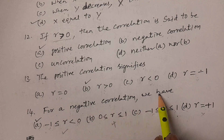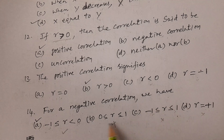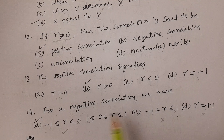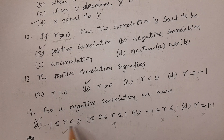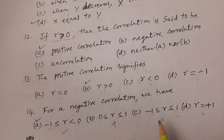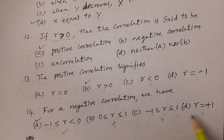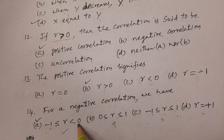For negative correlation: minus one less than or equal to R less than zero. For positive correlation: zero less than or equal to R less than or equal to one. For correlation coefficient limits overall: minus one less than or equal to R less than or equal to one. So negative correlation range is minus one to zero, option A.